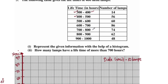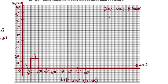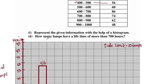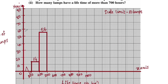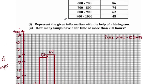The bar from 400 to 500 is plotted at 56. The bar from 500 to 600 is plotted at 60. We are careful to draw these bars accurately on the histogram.